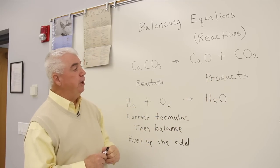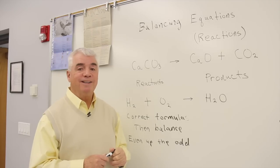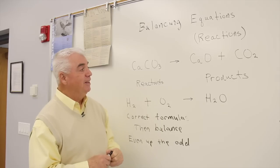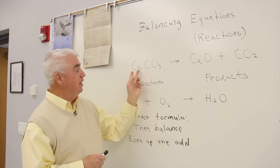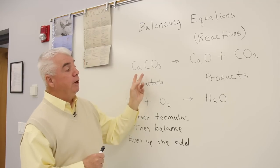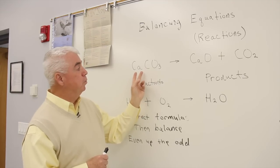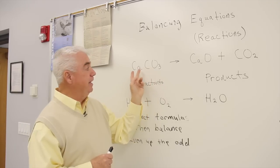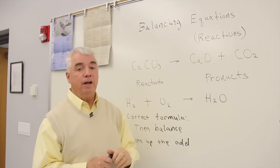When we show an equation we try to represent as nearly as we can the facts of nature. That is to say we try to use correct formulas. And one other thing that we try to do when we show a reaction, we try to have equal number of each element on the left and on the right.